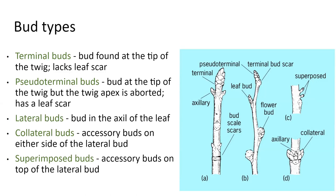You can have lateral buds — these are buds that occur in the axil of the leaf. When looking to see what the leaf is, you look for the bud. Then there are collateral buds — accessory buds on either side of the lateral buds. Sometimes those can be flower buds; on oaks it's very common to have a whole cluster of buds. Finally there are superimposed buds — accessory buds on top of lateral buds, something we might see in some of our flowering trees.